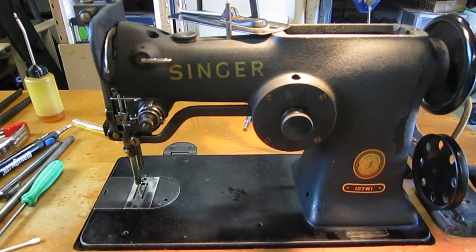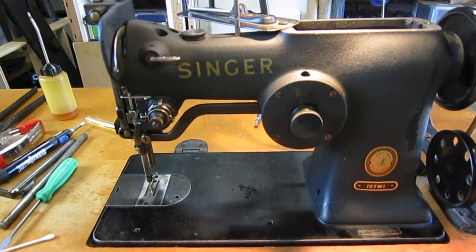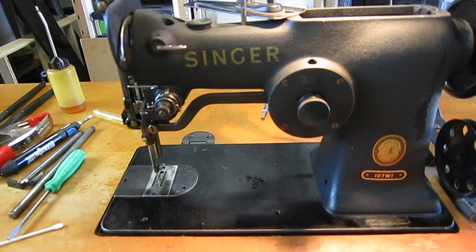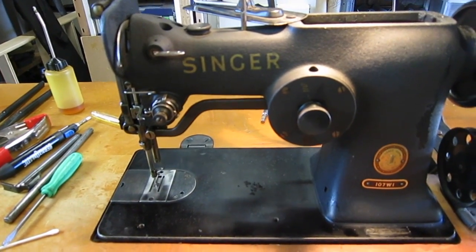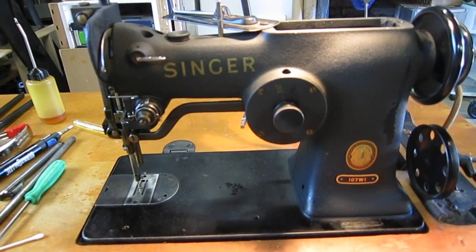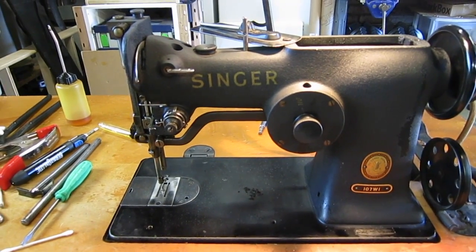Hey guys, welcome back. This is my Singer 107 W1, a vintage 1950s industrial straight stitcher. It's got a vertical rear-facing full rotary hook, a timing belt, full gear driven. This thing is awesome, and it was not a machine I was actually on the hunt for—it just kind of fell into my lap.